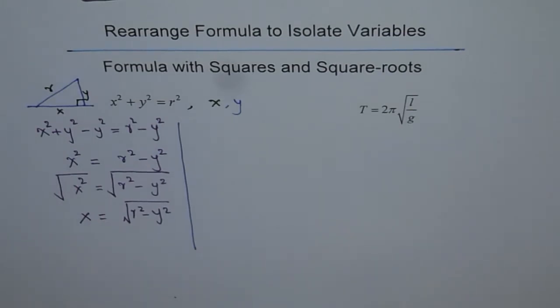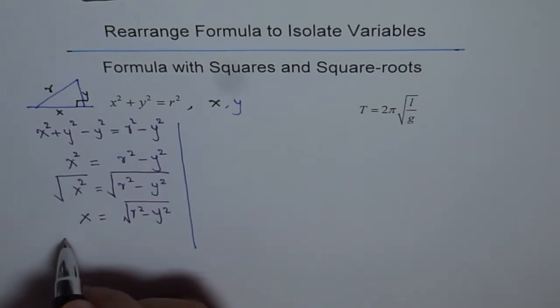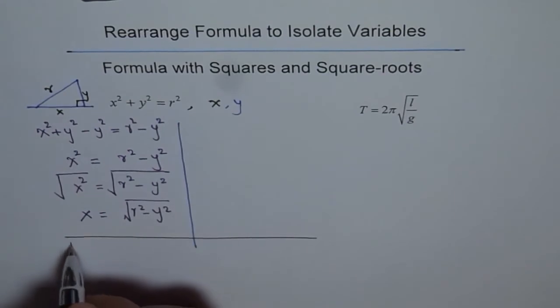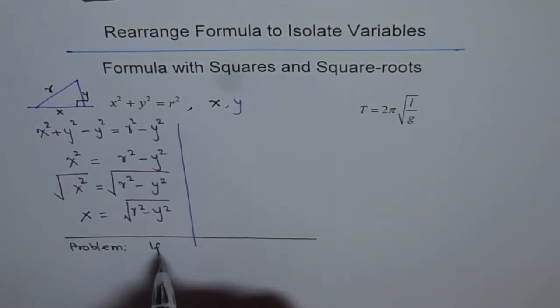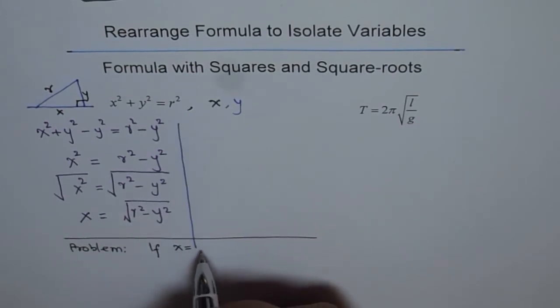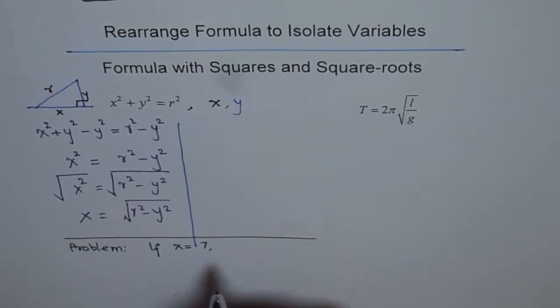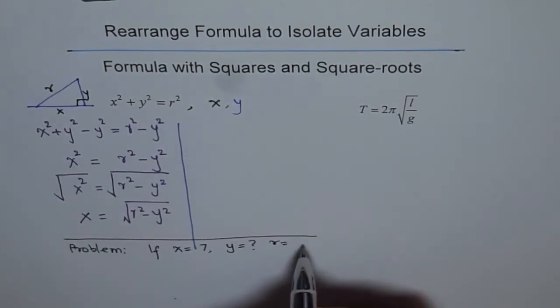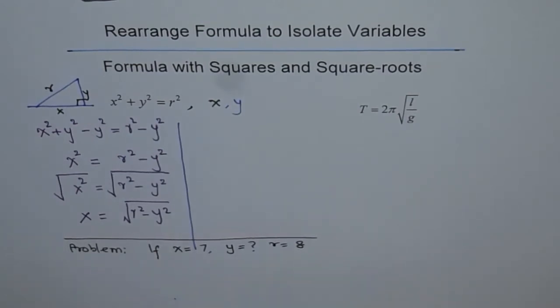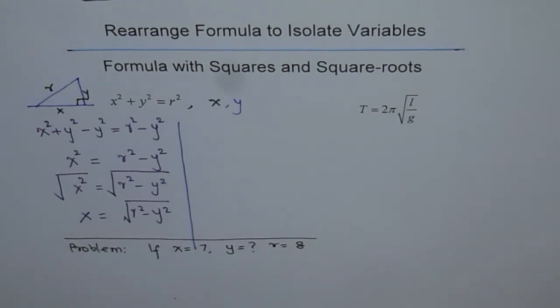And then, once you have rearranged your formula, you can solve the problem. And the problem for you is like this. If x is equal to, let us say 7 and y is equal to, you have to find y and let us say r is equal to 8, find y. So, you can use your calculator to do this part at times because that may be very tricky.